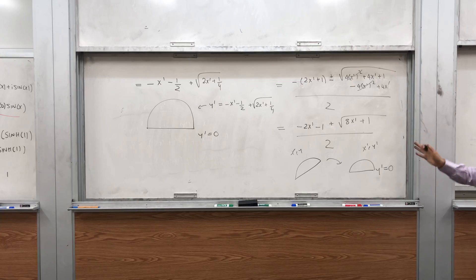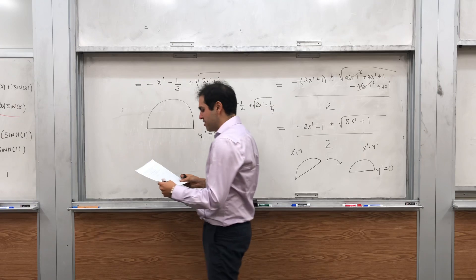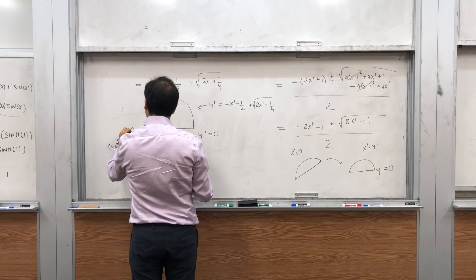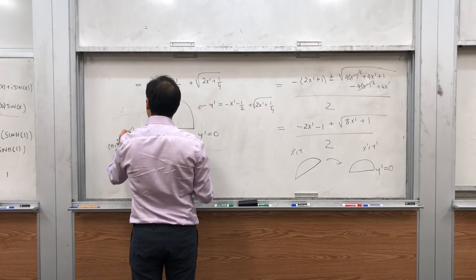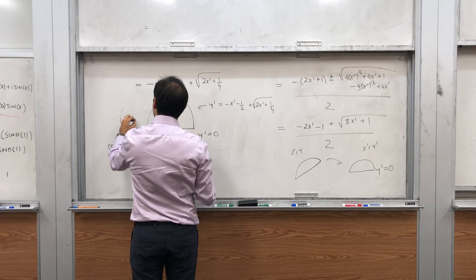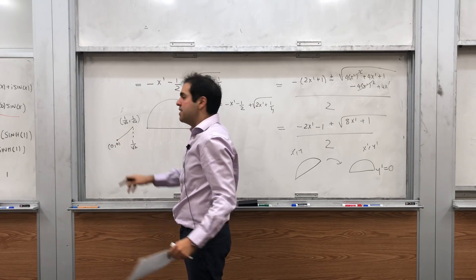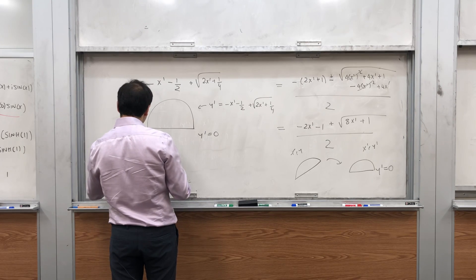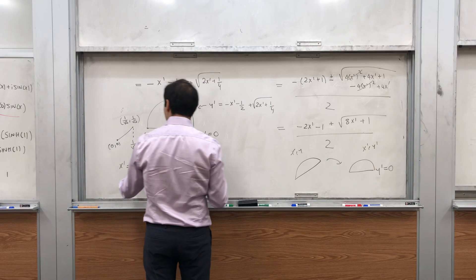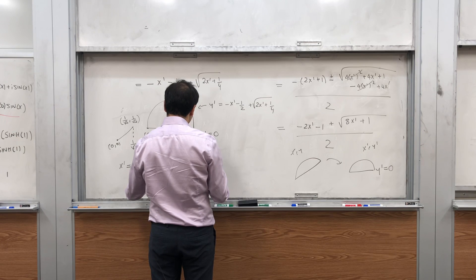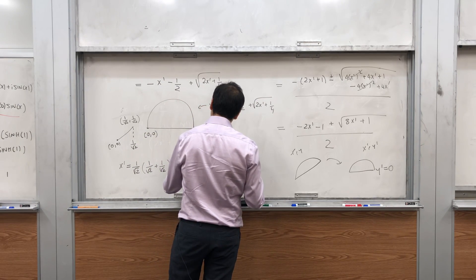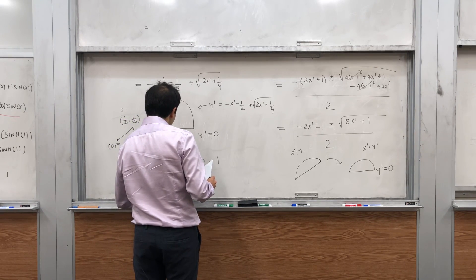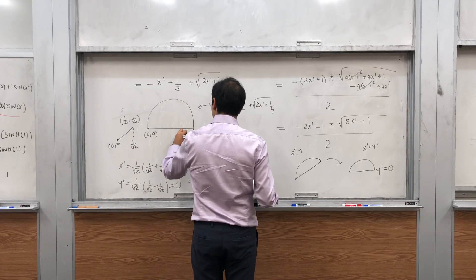We also need to determine what happens to the endpoints. We had the points (0, 0) and (1 over square root of 2, 1 over square root of 2). Rotating (0, 0) gives (0, 0). For the point (1 over square root of 2, 1 over square root of 2), x prime equals 1 over square root of 2 times (1 over square root of 2 plus 1 over square root of 2) equals 1, and y prime equals 1 over square root of 2 times (negative 1 over square root of 2 plus 1 over square root of 2) equals 0. So the new endpoint is (1, 0).